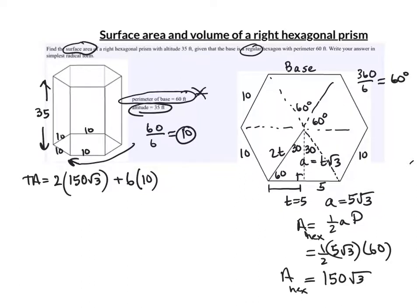And each rectangle has a base of 10 and a height of 35. So I'll simplify this. The total area will be 300 root 3 plus 60 times 35, which is 2,100.